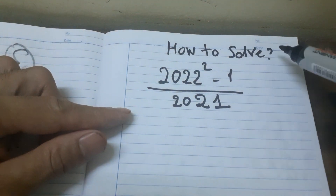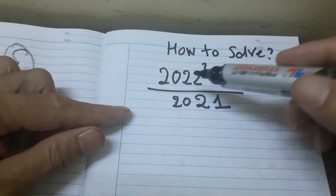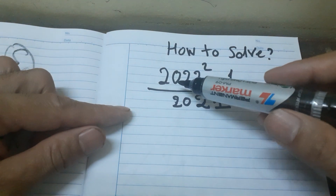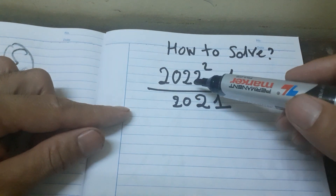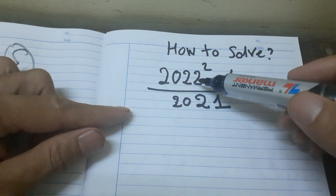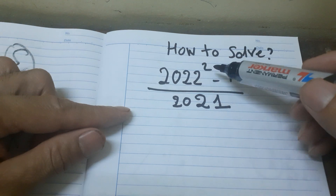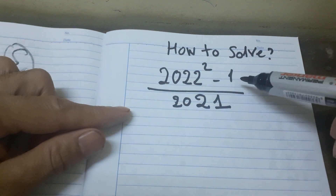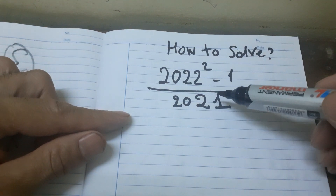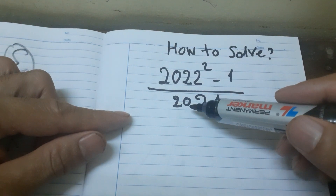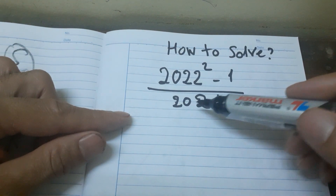How to solve two thousand two square minus one, divide two thousand.